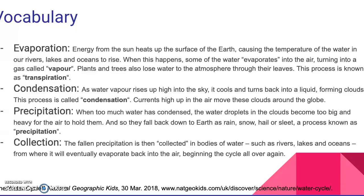Precipitation is our next word. When too much water has condensed, the water droplets in the clouds become too big and heavy for the air to hold them, and so they fall back down to earth as rain, snow, hail, or sleet. This is a process known as precipitation.